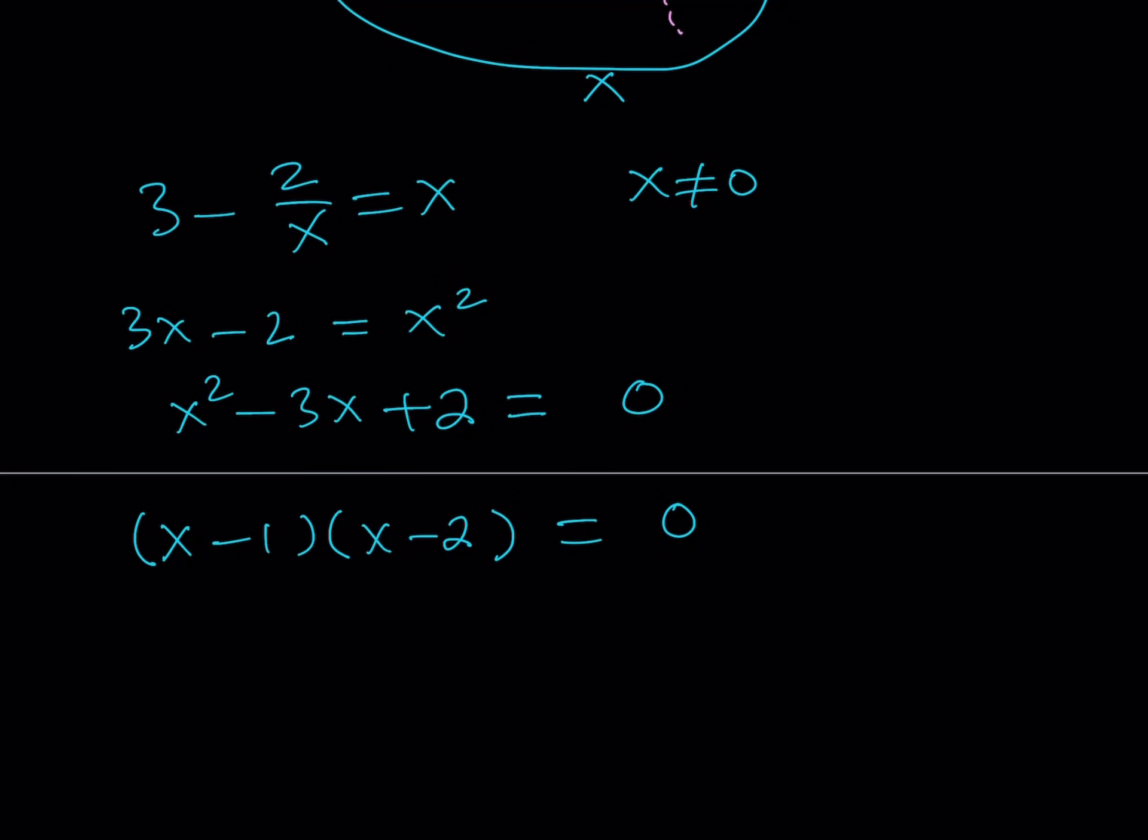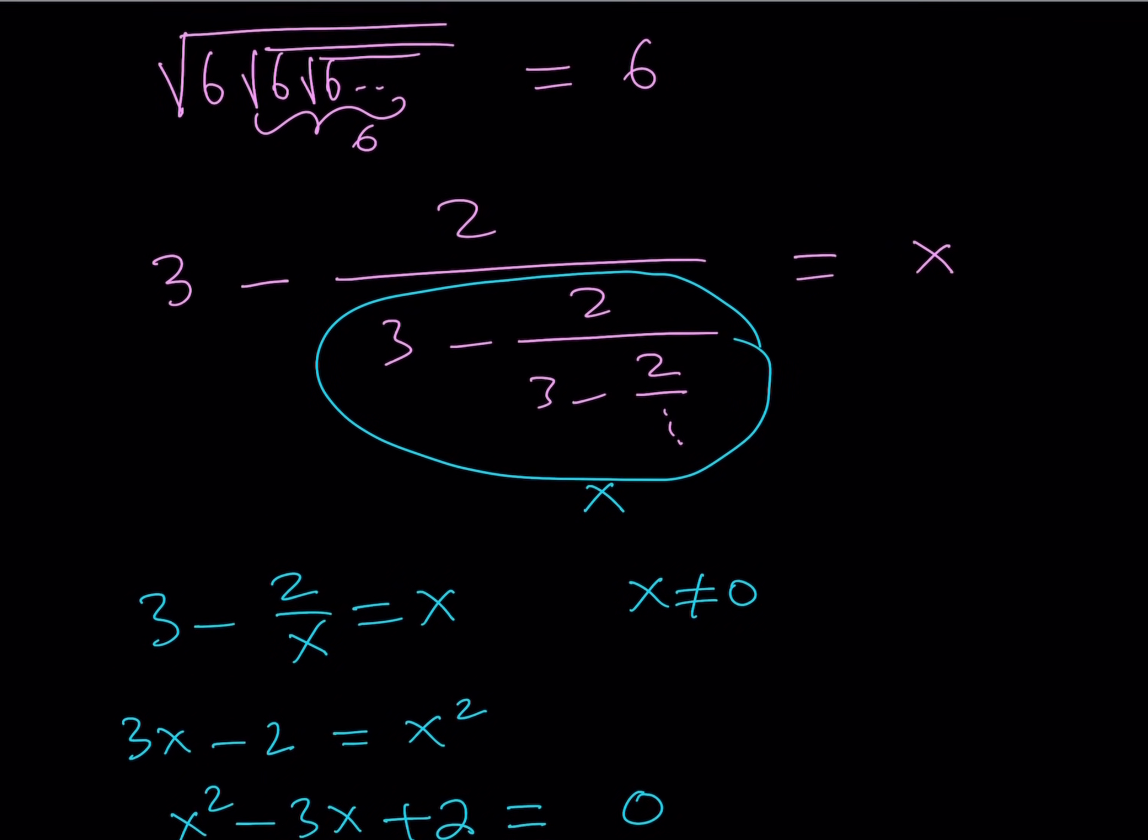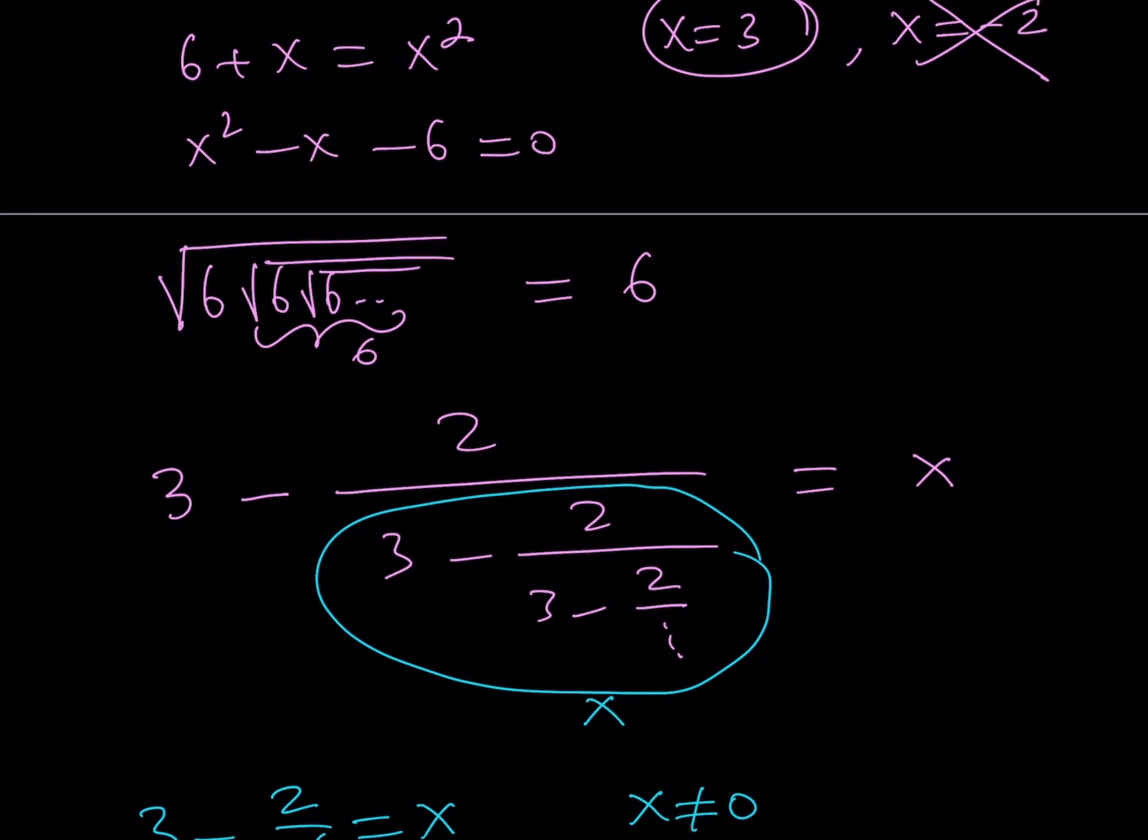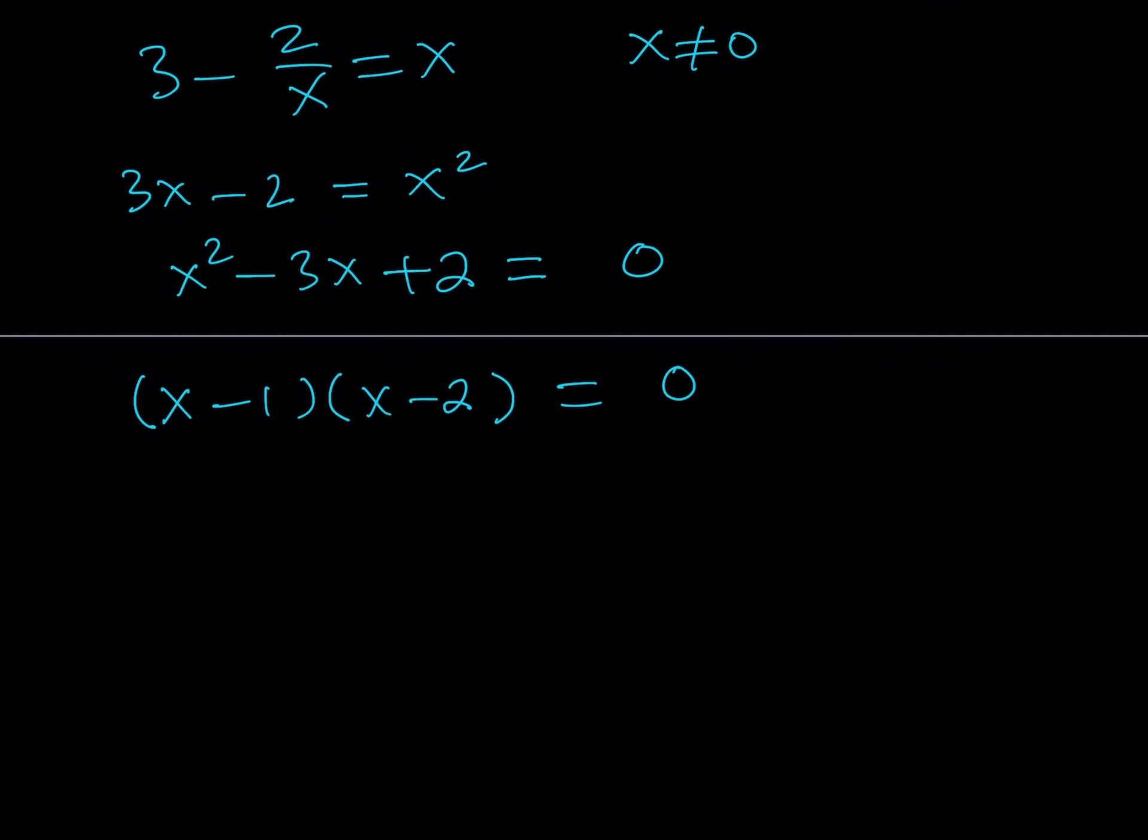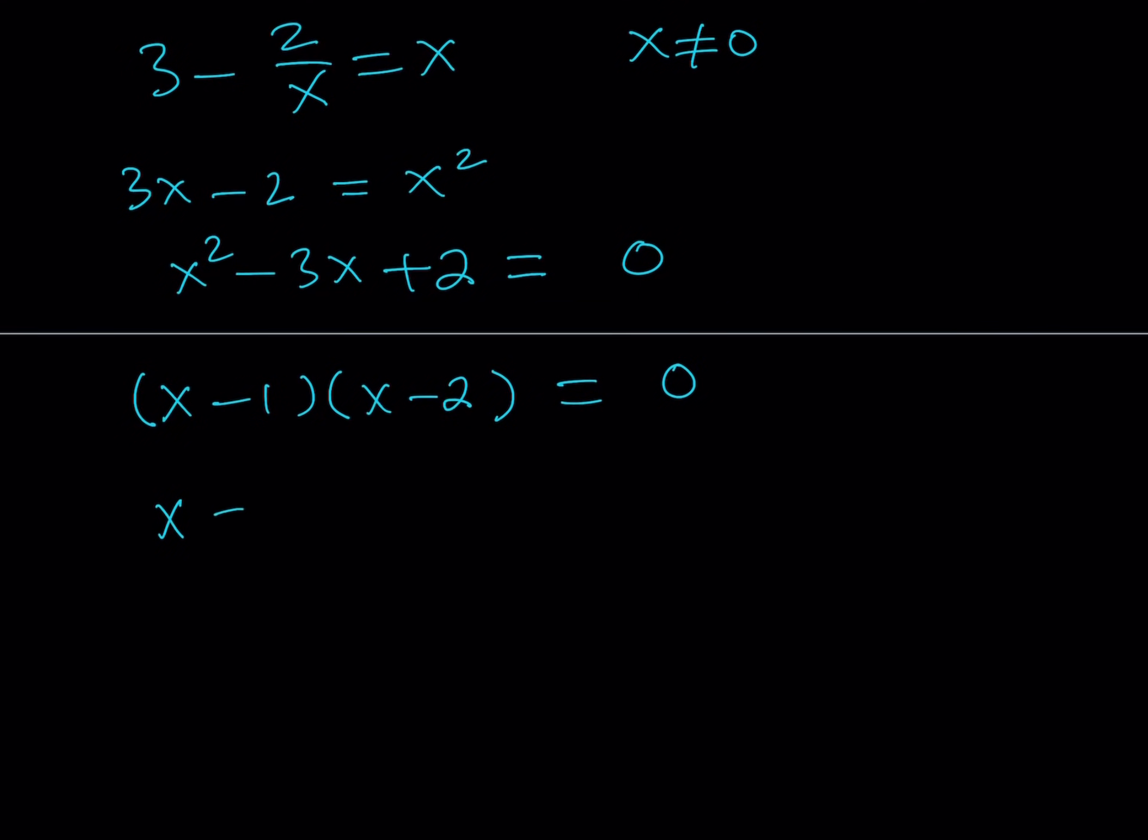So from here, you're getting two solutions. Unlike the other one, the other one gave us a positive solution and a negative solution. A negative solution was definitely not legitimate. We couldn't use it because the expression was positive. But here you do have two positive solutions. So what are you going to do with them?